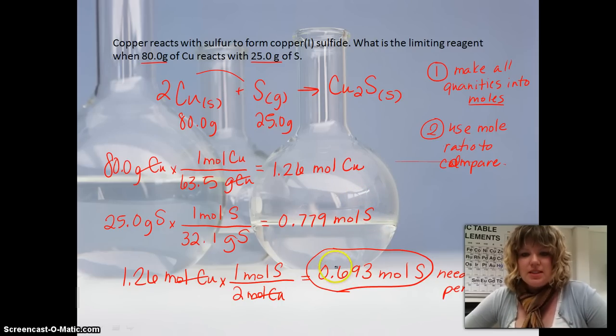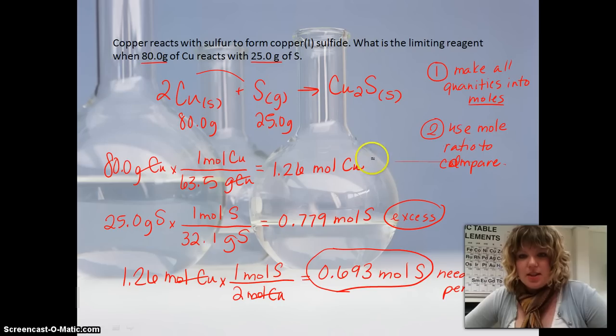So now you compare moles of sulfur here to your moles of sulfur here. So, since this is less than this, we know that if it was a perfect reaction, and this is the amount of moles we'd have, this would be the excess. This would be the excess, which would be making this the limiting reactant.